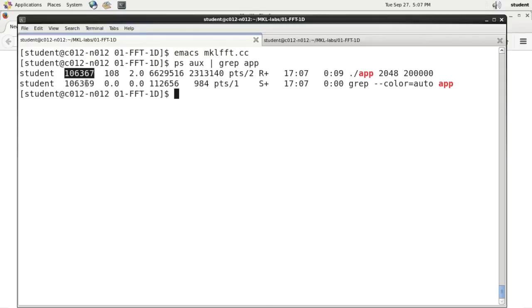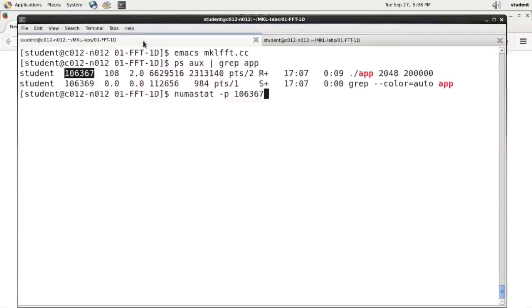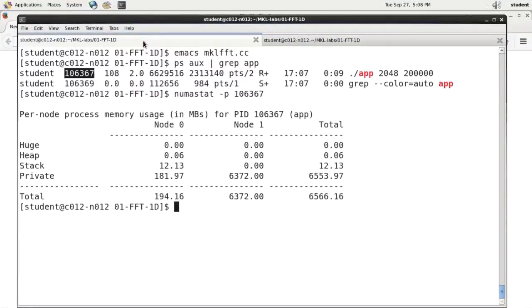And I will run numastat -p followed by the process ID. So my calculation is running, and as it is running I can see the utilization. Memory utilization is broken down by nodes: node 0 and node 1, and these are my NUMA nodes. You can see that most of the memory is allocated in NUMA node 1.